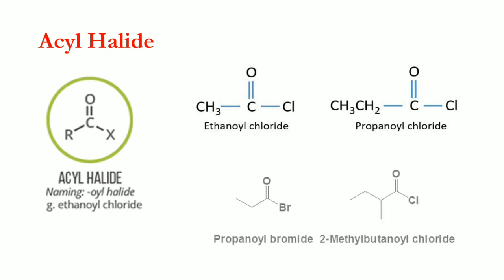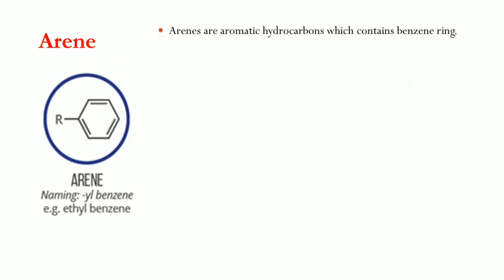A three-carbon chain with bromine as the halogen gives propanoyl bromide. Another example has a substituent at carbon two: with three carbons as the parent chain, a methyl group at carbon two, and four carbons total, the compound is named 2-methylbutanoyl chloride.